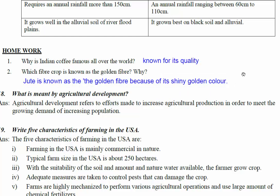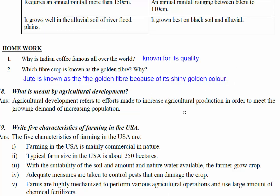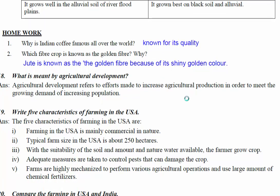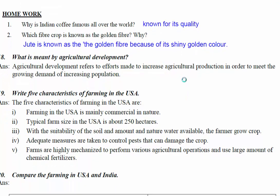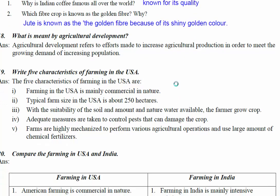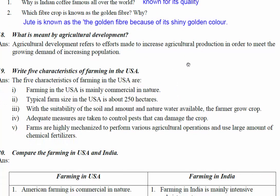Question number 18: what is meant by agricultural development? Agricultural development refers to efforts made to increase agricultural production in order to meet the growing demands of an increasing population.